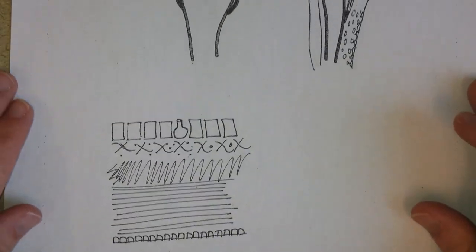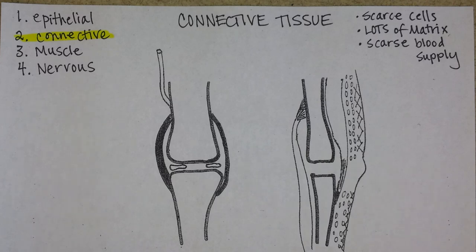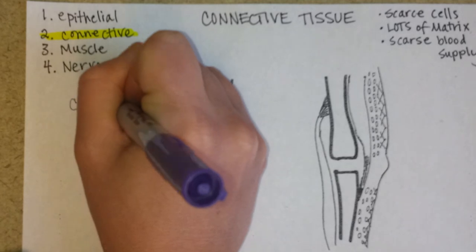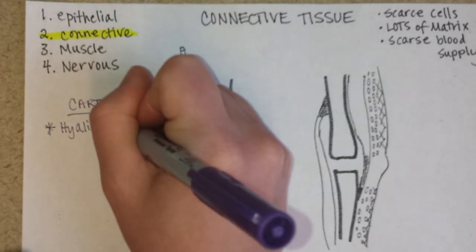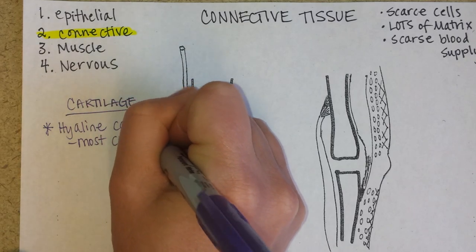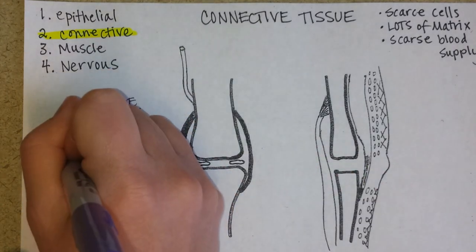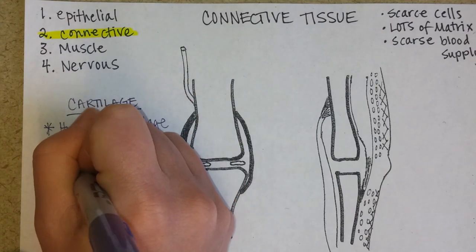We'll come back to that periodically throughout the quarter and flesh that out — pun intended. First, let's talk about the different kinds of cartilage, because cartilage is always connective tissue. There are three kinds. Hyaline cartilage is the most common in your body, and it's found, for example, at articulations.